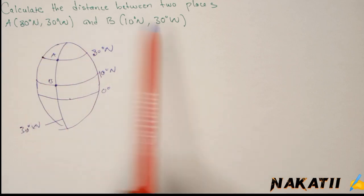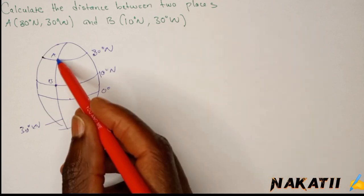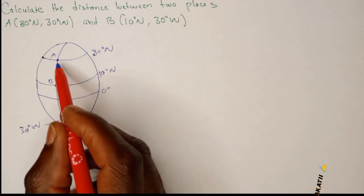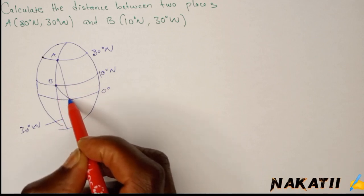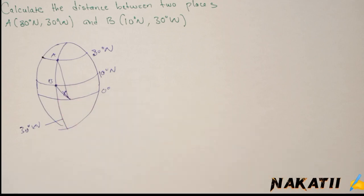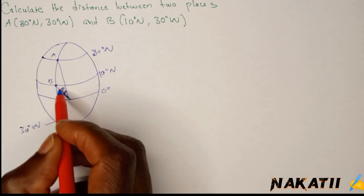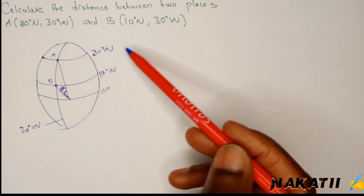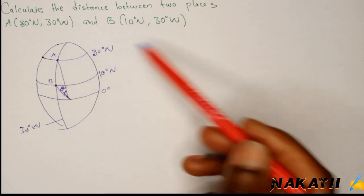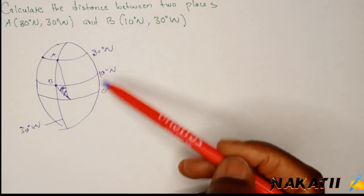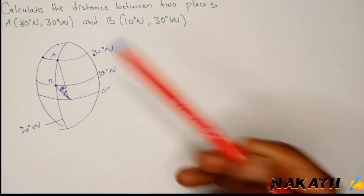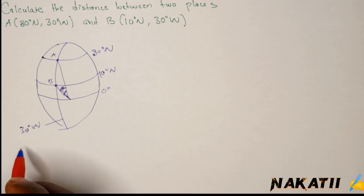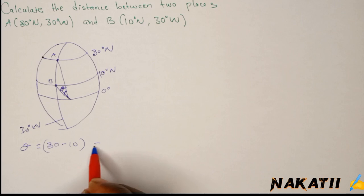We have been told to calculate the distance between these two points, so this distance here. What we need to get is the angle between these two points. When these two latitudes are on the same side of the equator, to get the angle between them you just minus the latitude angles. So we're going to say theta is 80 minus 10, then you get 70 degrees. So that is the angle between point A and B.